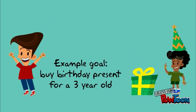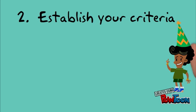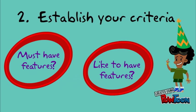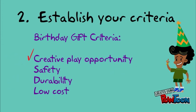The second step is to establish your criteria — which features do you really need or would just like to have? In the birthday gift example, Joey decided that he wanted a gift that provided creative play opportunity, safety, durability, and was low cost.